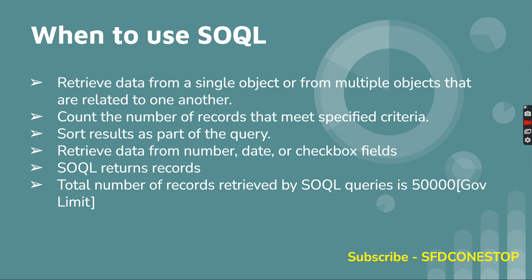Whenever you write down SOQL it should return something. The return type of SOQL is records. Also, if you remember, there are governor limits in Salesforce. As part of SOQL, the total number of records that can be retrieved using SOQL queries is limited to 50,000. This is one of the Salesforce governor limits — you can retrieve around 50,000 records using SOQL, and the return type for SOQL is records.